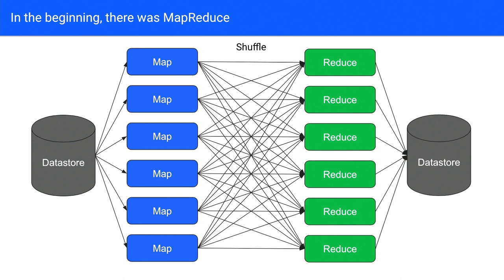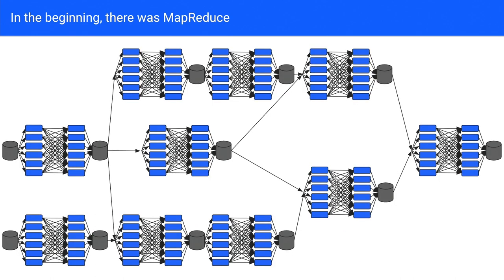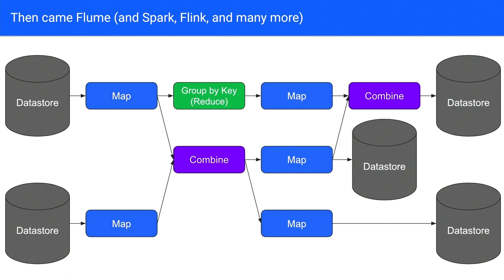This worked great if your problem easily decomposed into a map and a reduce. But very often people found themselves with setups that had a bunch of MapReduce steps chained one after another with a write to a data store in the middle. Out of that, Google came out with Flume. Spark and Flink were the open source answers as well. The idea was to take these sets of maps and reduces and coalesce them into a graph, then allow backing execution engines to do all sorts of optimization — for example, fusing two consecutive map steps onto one set of machines.